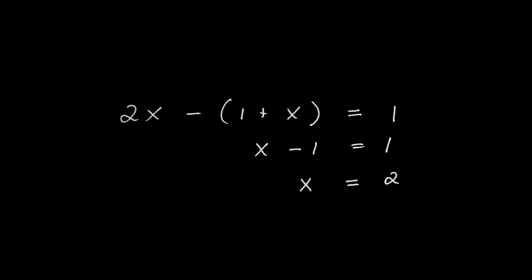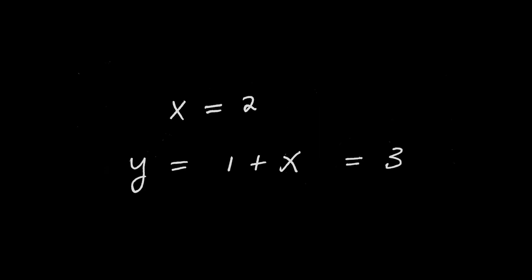Distributing, I have 2x minus x, which is x, minus 1 equals 1. Adding 1 to both sides gives x equals 2. By leveraging both equations — plugging one into the other — I was able to determine that x equals 2. Once I know x, finding y is even easier: y equals 1 plus x, where x equals 2, so y equals 3.